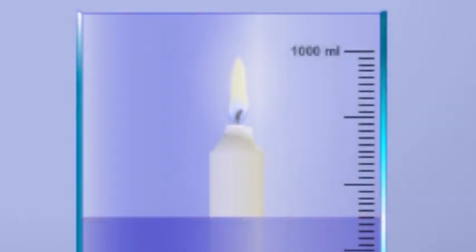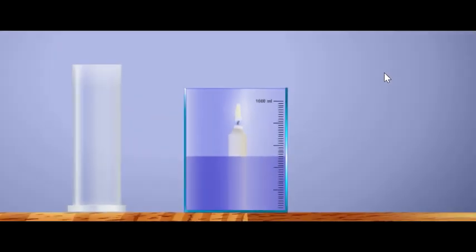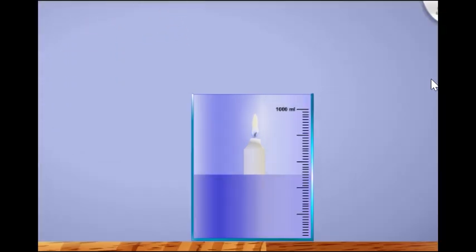Stick the burning candle in the beaker. Fill half of the beaker with water. Light the candle. Cover the candle with the inverted gas jar and leave the candle to burn.